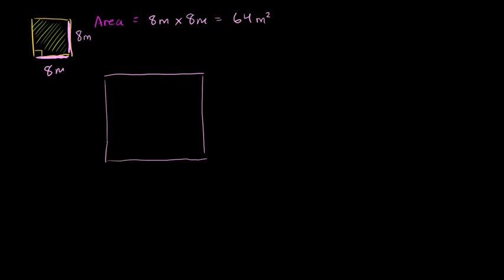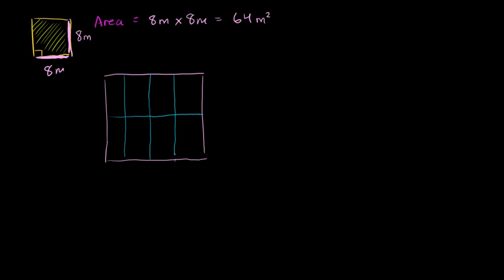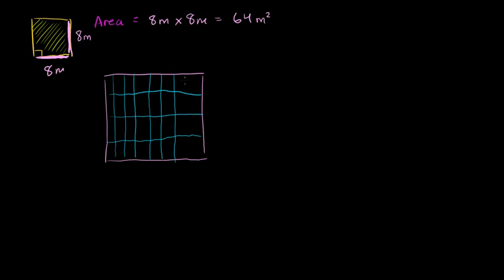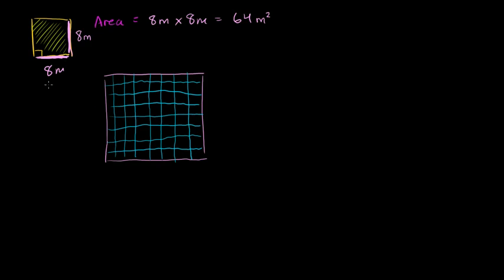So let's draw the same square a little bit bigger. I'm going to divide it in the middle, then divide each side again, and one more time. Now I'm showing you the dimensions along the base and the height. We said this is 8 meters, and I have 1, 2, 3, 4, 5, 6, 7, 8 meters along the base. And the same thing along this side: 1, 2, 3, 4, 5, 6, 7, 8 meters.